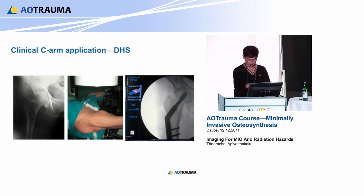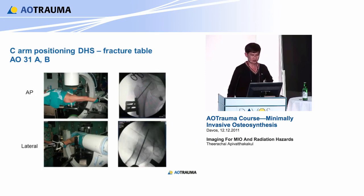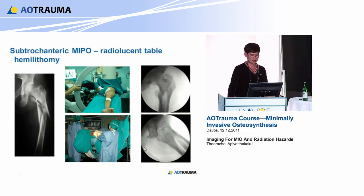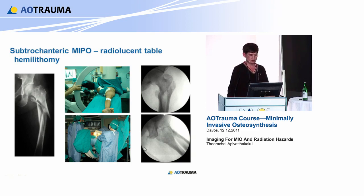Now I show you patient positioning - how to position for MEO procedures. This is the AP and lateral for the DHS - everyone knows: AP must be very clear and then the lateral X-ray. If you have proximal femur fractures like in this case, I usually do the hemi-lithotomy or the frog-leg position depending on the fracture configuration. This is the AP, and this is the lateral - you must see the femoral neck clearly like this, not oblique. In hemi-lithotomy, the lateral X-ray shows the screw coming in - not at the front, not at the back, but in the center.